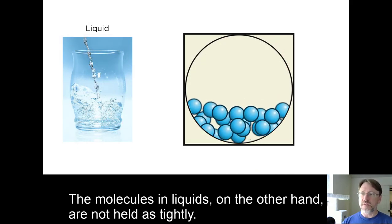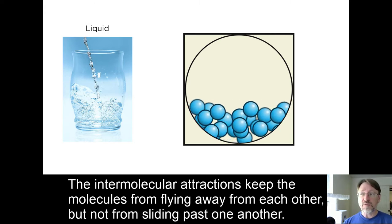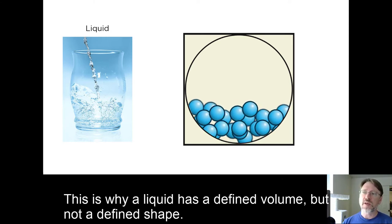The molecules in liquids, on the other hand, are not held as tightly. The intermolecular attractions keep the molecules from flying away from each other, but not from sliding past one another. This is why a liquid has a defined volume, but not a defined shape.